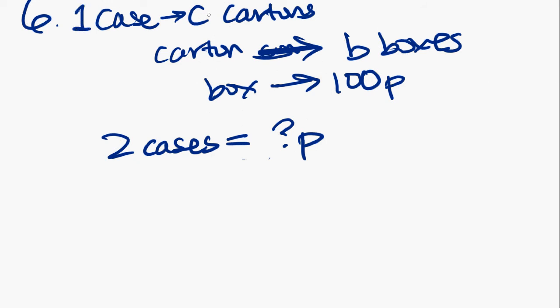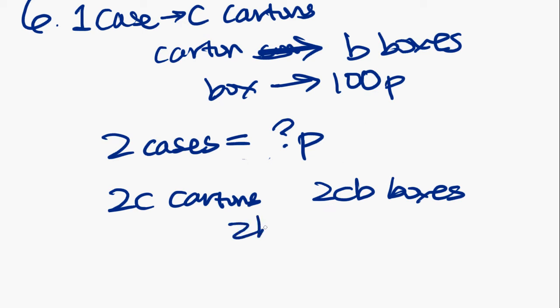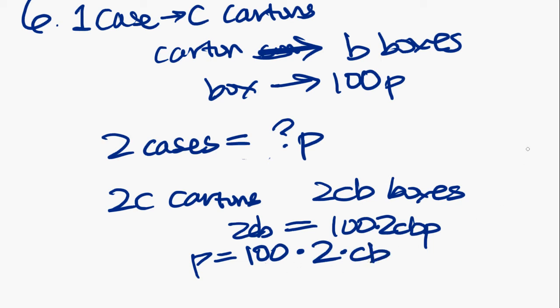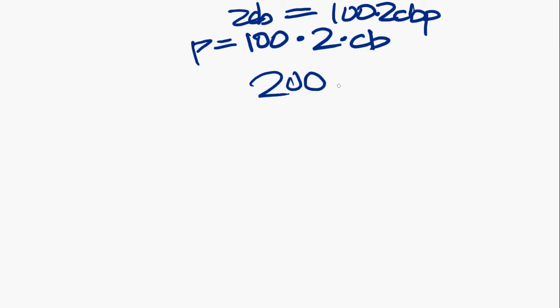So we know that one case contains C cartons. So what would two cases contain? Two cases would contain 2C cartons. One carton contains B boxes. So 2C cartons would contain 2CB boxes. We know one box contains 100 paper clips. So 2CB boxes would contain 100 times 2CB paper clips. I think that's what they were asking. Yes, paper clips.